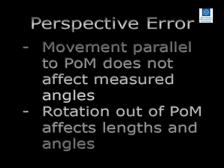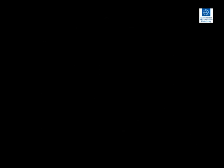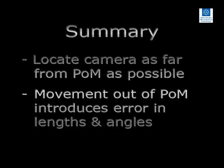To summarise: movement parallel to but out of the plane of motion does not affect measured angles. However, rotation out of the plane of motion affects calculated length of objects and measured angles. When performing a two-dimensional film analysis, to reduce perspective error it is important to locate the camera as far from the plane of motion as possible.